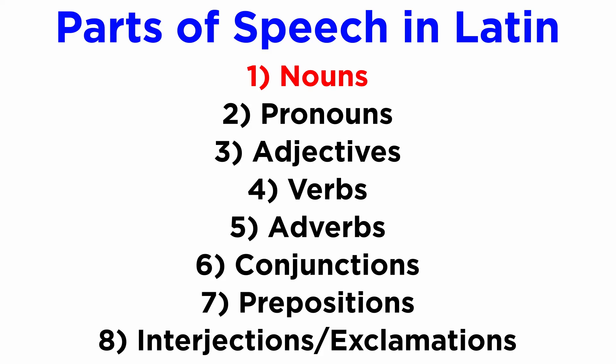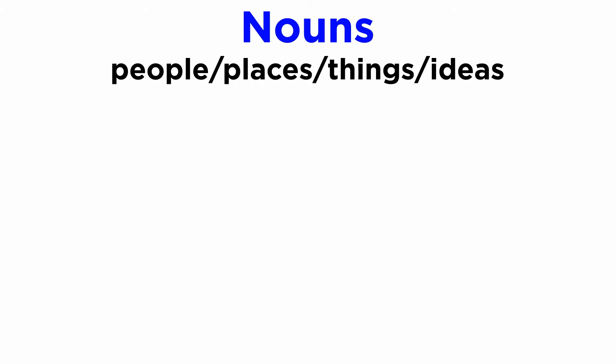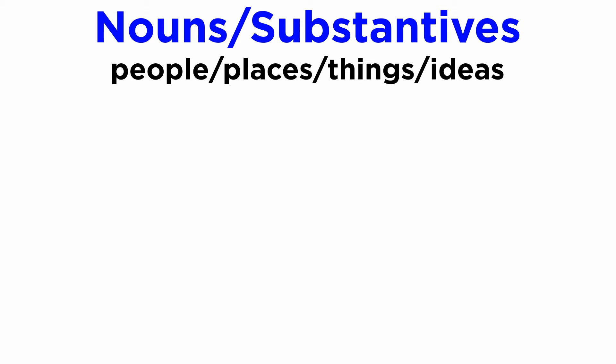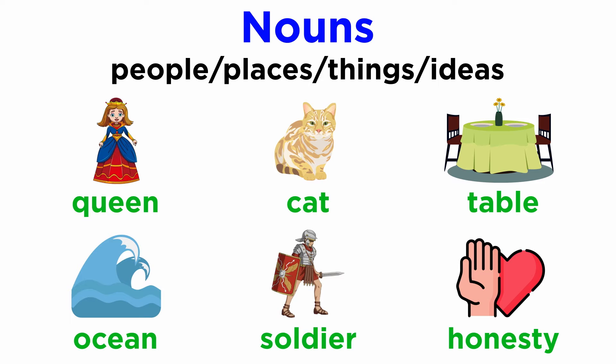First, we have nouns. These are words which describe people, places, things, or ideas. Often in Latin grammar, nouns are also called substantives, from the Latin word substantia, meaning substance. Queen, cat, table, ocean, soldier, honesty — whether abstract or concrete, animated or not, these are all nouns.